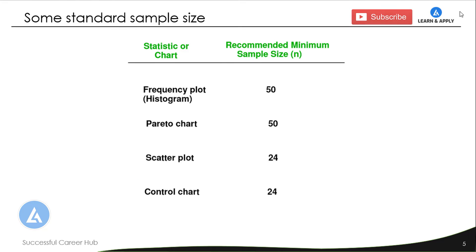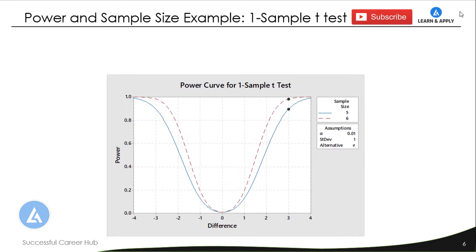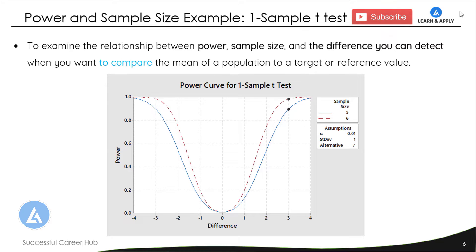Now let's go for an example to calculate sample size based on power and differences — specifically, a power and sample size example for a one sample t-test. We are going to use the one sample t-test to understand how power and sample size are calculated and what the relationship is between them, particularly when comparing the mean of a population to a target or reference value.